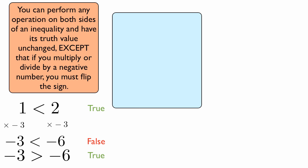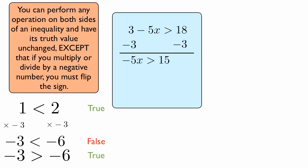So obviously this is true. Here's the first example of how to solve an inequality — we do it exactly like we would solve an equation. We subtract three from both sides, and we get negative five x is greater than 15. We divide both sides by five, and we get x is less than negative three. Why less than? Because we divided by a negative number. The same thing applies because when you divide by a negative number, it means you're multiplying by the reciprocal of that negative number. So for multiplication or division, you have to flip the sign.